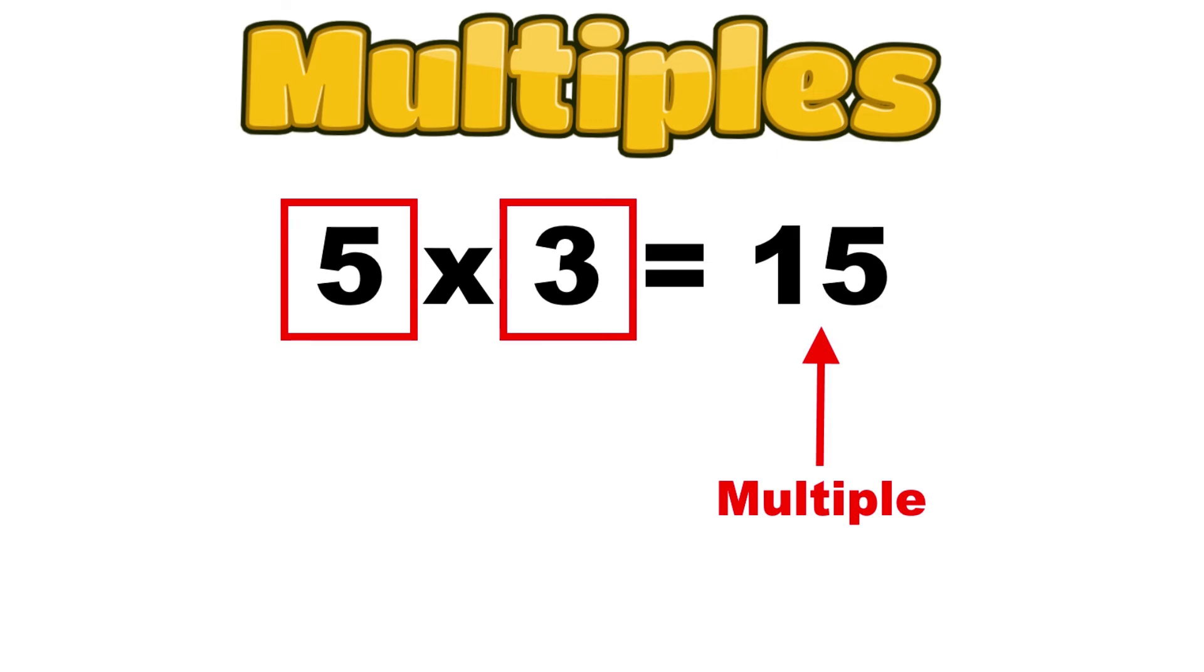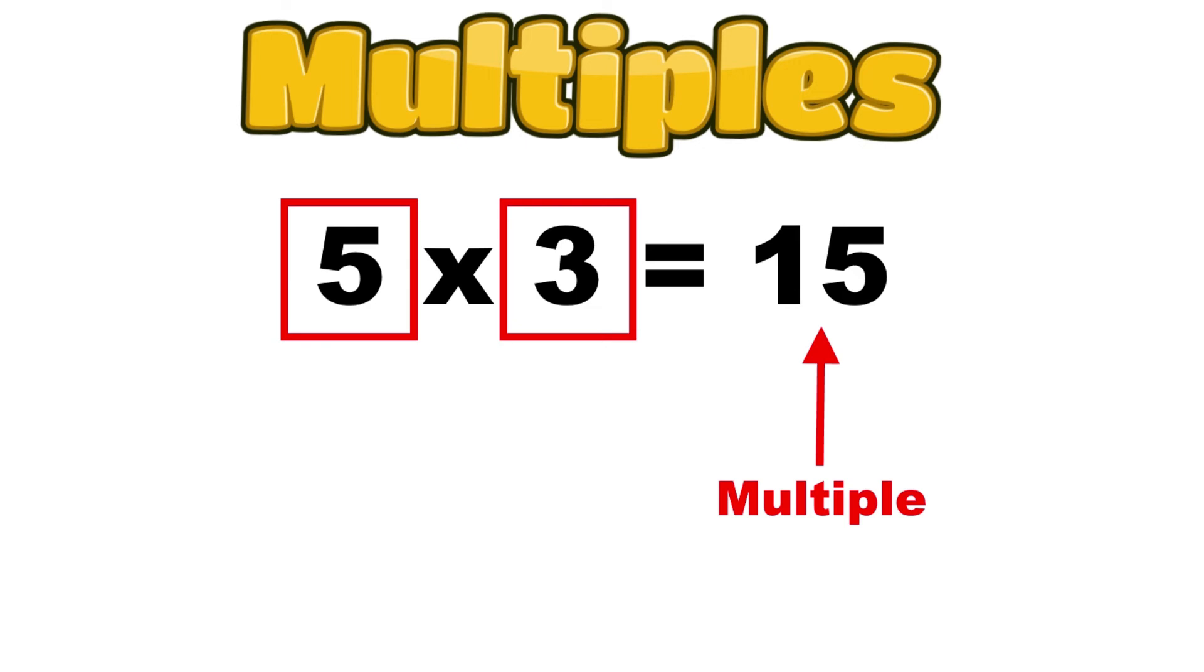A quick way to find the multiples of any number is to simply skip count, starting with that number. For example, if you wanted to find the first 10 multiples of 3, you would start with 3 and then count, adding 3 each time. All the numbers you say when you count by 3 are multiples of 3.